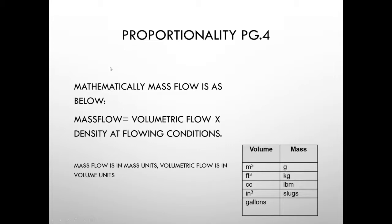Proportionality speaks to the relationship between volumetric flow and mass flow. The major difference is a proportionality factor involved in the calculation that compensates for changes in density. Mathematically, mass flow equals volumetric flow times the density at flowing conditions. Mass flow is always measured and recorded in mass units; volumetric flow in volume units. Common volume units include cubic meters, cubic feet, cubic centimeters, and cubic inches. Mass units include grams, kilograms, and pounds.